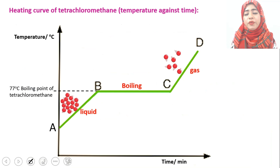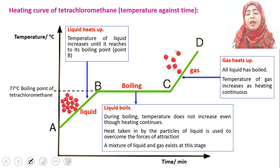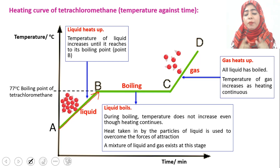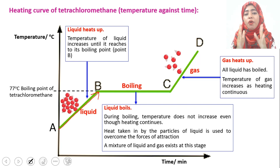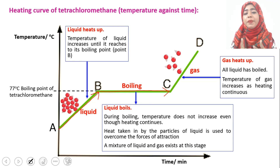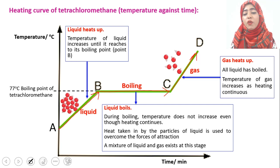Here is a graph of temperature against time for tetrachloromethane. At point A we have just liquid. As we heat the liquid its temperature increases until point B, which is the boiling point — the temperature is now high enough for the liquid to start changing into gas state. From point B to C we have both liquid and gas states, and during this stage the temperature does not increase further because all the heat is used to remove the attractive forces between particles. After point C we have just the gas, and if we continue heating, the gas heats up more.